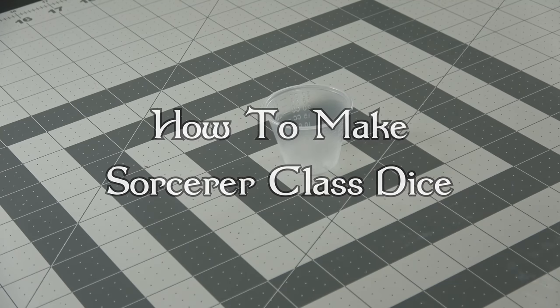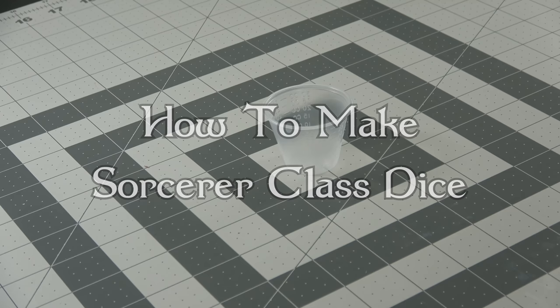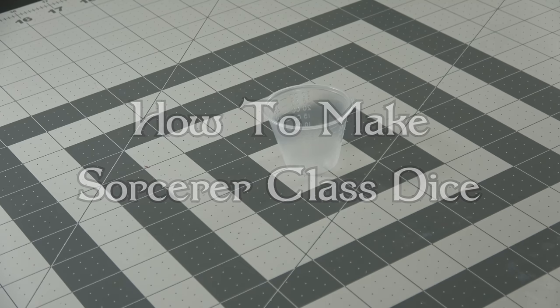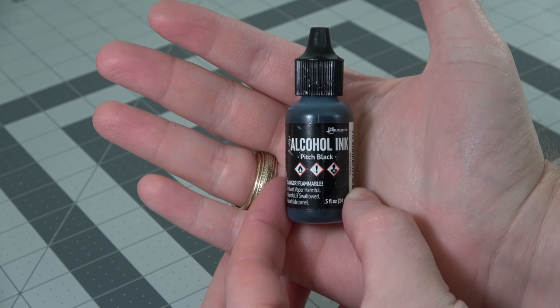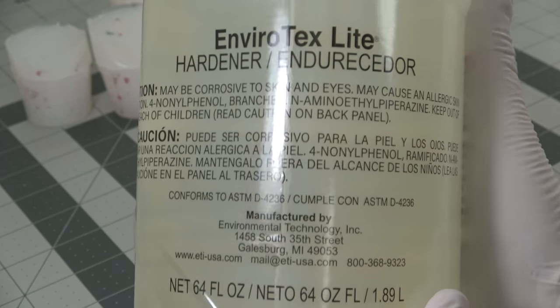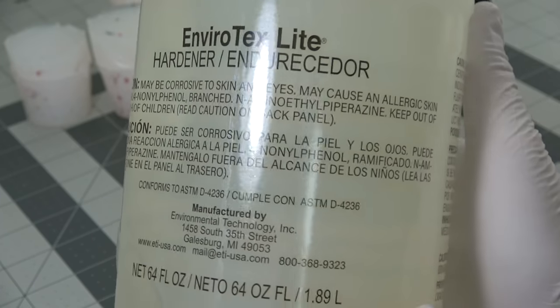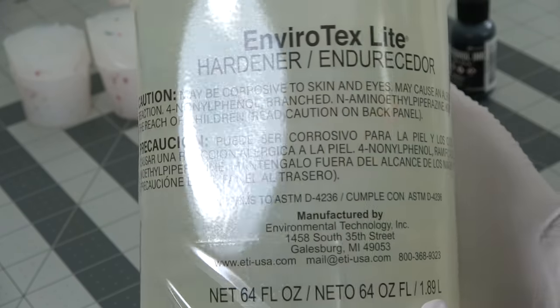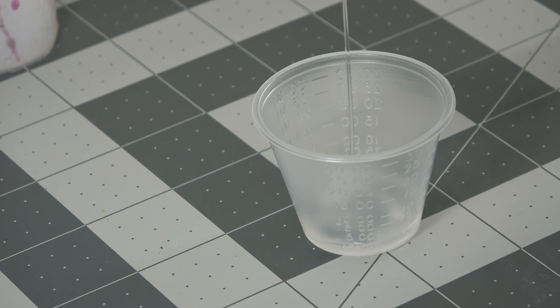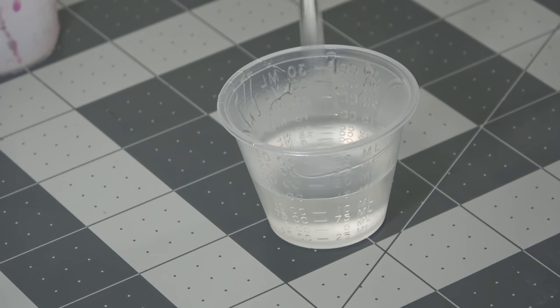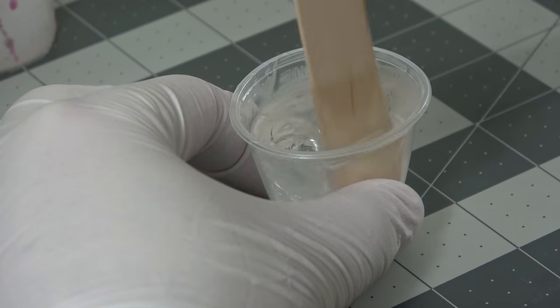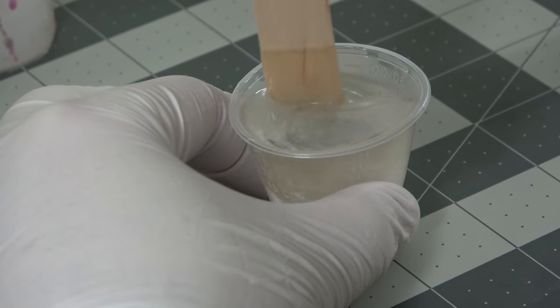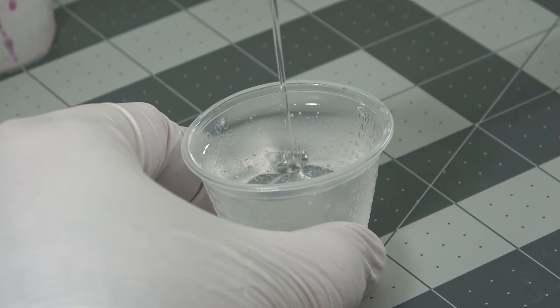That's right baby, we're back to making some more class-themed dice. And today we're going to be focusing on sorcerer class dice. We're going to be making two styles: black draconic ancestry sorcerers and wild magic sorcerers. Let's go ahead and start on the black draconic ancestry one. I'm going to be using some Envirotex Light resin. Any casting resin will do. Mine is a one-to-one part by volume. I'll mix these two up just enough until there are no more streaks and it's completely clear.